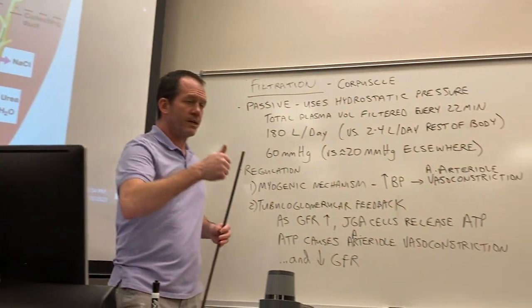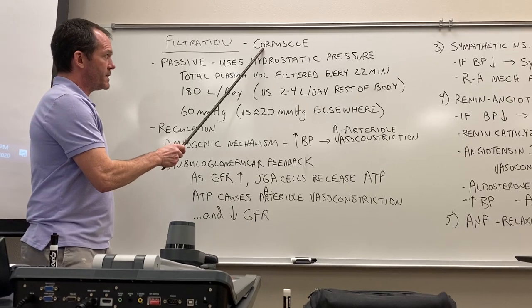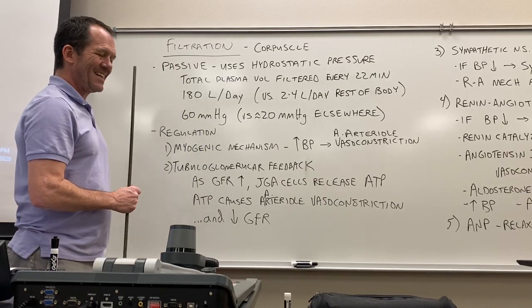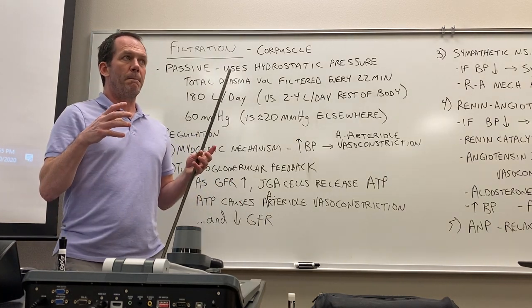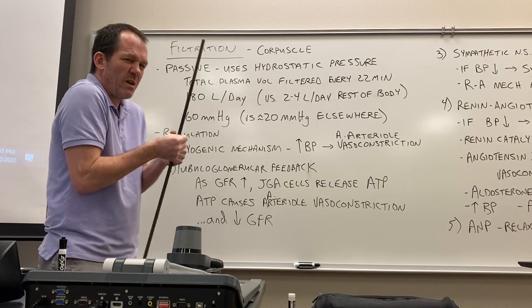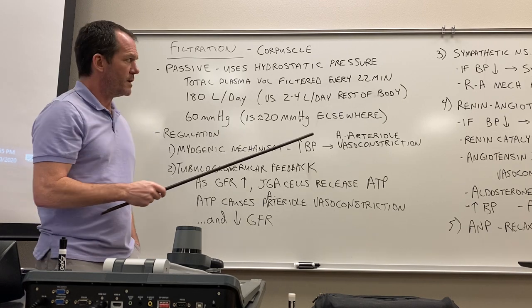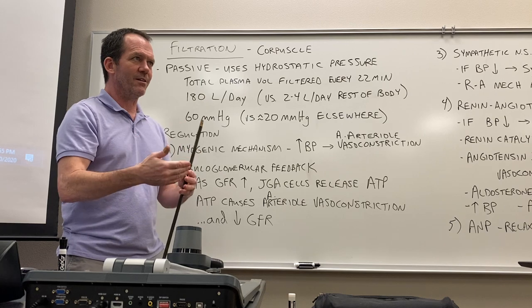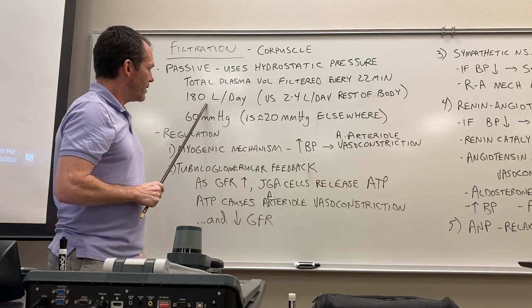Filtration takes place only in the renal corpuscle — the Bowman's capsule and glomerulus — and it is a passive process. No ATP is spent; instead, blood pressure in those capillaries is so elevated that hydrostatic pressure does all the work, squeezing plasma out of the blood vessels. You filter approximately 180 liters of plasma per day — your entire body's worth of plasma processed roughly every 22 minutes.